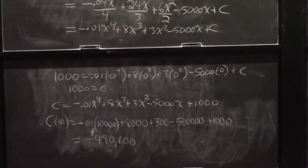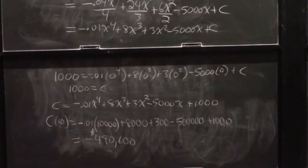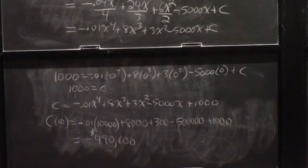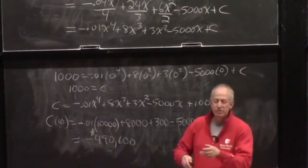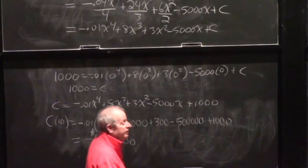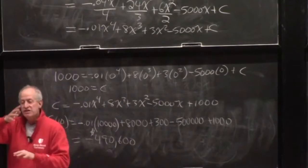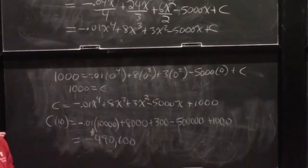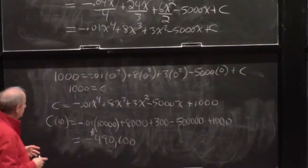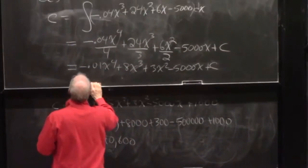Let's do one more topic. In business statistics you'll see averages. When we compute averages in general we add a bunch of things and divide by a number, but you can also find averages for things that are continuous — that have a smooth continuum of values, not merely individual numbers.